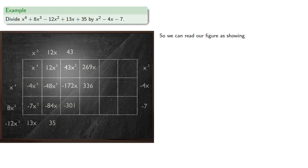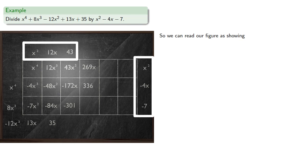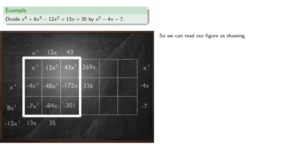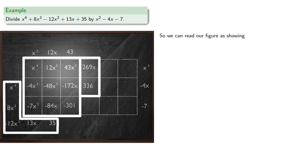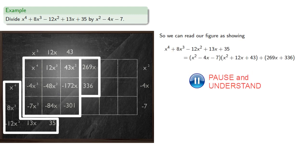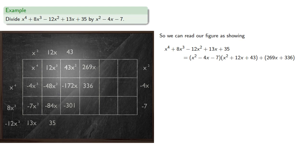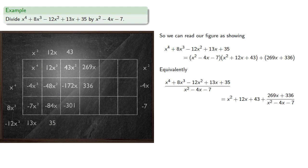We can read our figure as showing x squared minus 4x minus 7 — that's the height — times width x squared plus 12x plus 43, which gives us this portion of the figure, and if we add 269x plus 336 we get our entire figure x to the fourth minus 12x squared plus 13x minus 35. Equivalently, if we divide by one of our factors we get our result, and we can express this as a quotient with remainder.